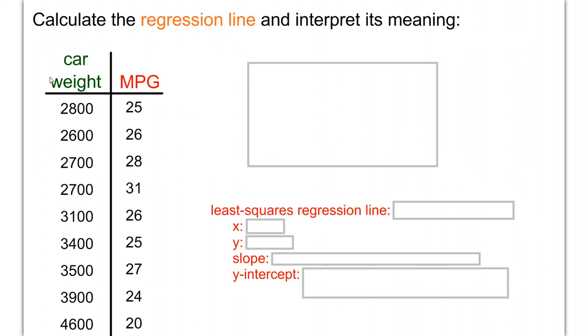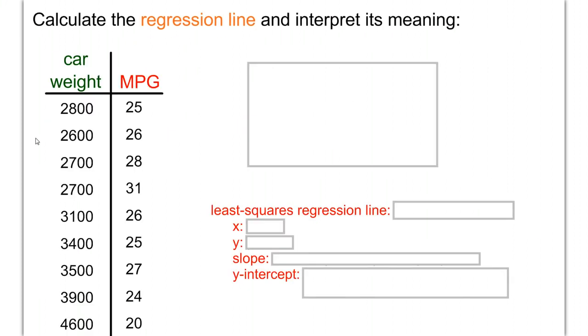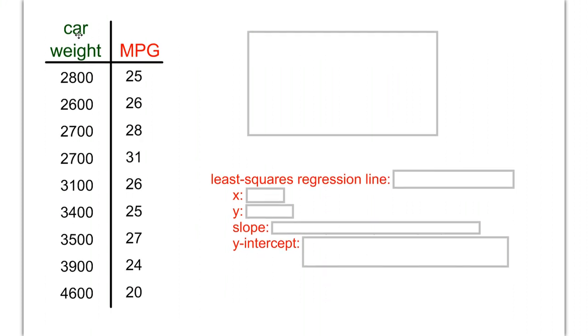Instead of just sketching the regression line, we need to calculate it and interpret what the formula means. Here we have all the data points in a table expressed as numbers. We're going to assume car weight is the x-axis as before, and miles per gallon is y.